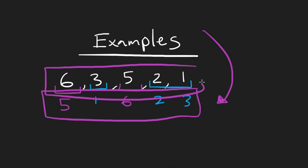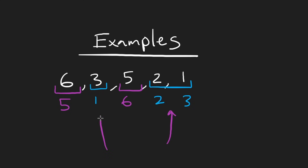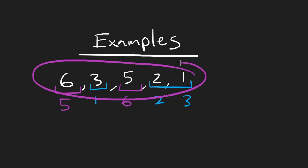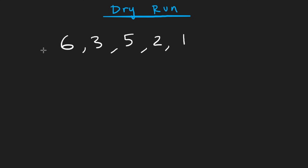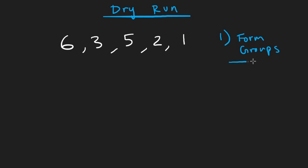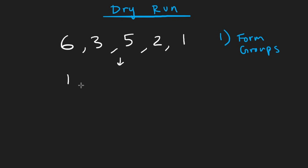We know what we're doing: identify the groups, then build the output. The first step is to form the groups. It makes sense to sort the input first, so we can find contiguous elements. In this example, after sorting we end up with 1, 2, 3, 5, 6, with a limit of one. If the limit were two, everything might be swappable — or an array like 1, 3, 5, 7 would also be fully sortable.